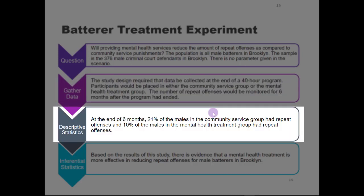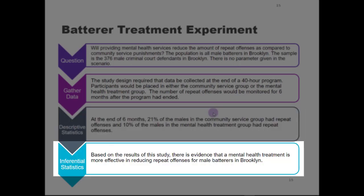In the descriptive statistics phase, at the end of six months they calculated what proportion of the participants had repeat offenses and which group those people were in. They found that 21% of the males in the community service group had repeat offenses and 10% of the males in the mental health treatment group had repeat offenses. The 21% and 10% are statistics because they describe the people in the sample, not the population. However, because they did a study with a sample, they can now go back and answer the original question about the population — saying that based on the results of this study, there is evidence that mental health treatment is more effective in reducing repeat offenses for male batterers in Brooklyn.